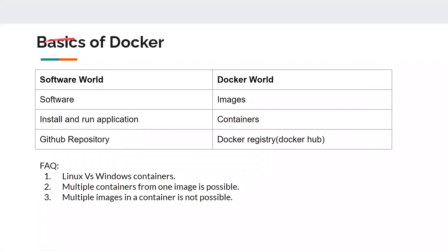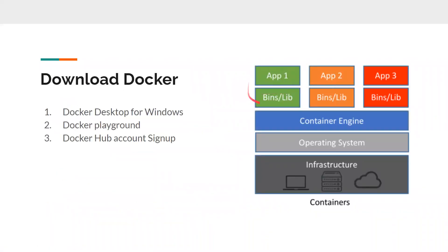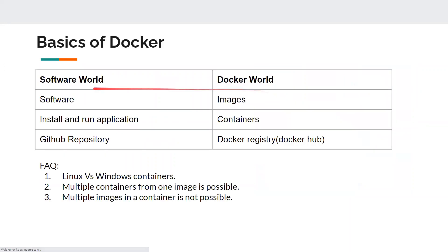Now we need to understand certain analogies between the software world and the Docker world. In test automation, suppose you have a Chrome browser — on your physical laptop, if you want to use Chrome, you download the software. The same way, in Docker you have software in the form of images. If you want to create a container, you need an image — a software that needs to be installed in that particular VM. So software in the software world equals images in the Docker world.